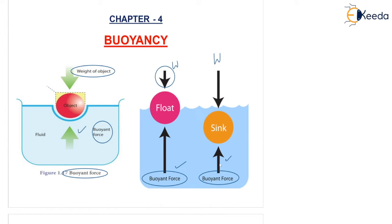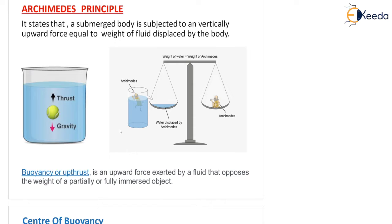Now we are going to see about Archimedes' principle and more concepts of buoyancy. Archimedes' principle states that a submerged body is subjected to a vertically upward force equal to the weight of the fluid displaced by the body. It is very important to note both the direction and magnitude, because this is a force — a vector quantity with both magnitude and direction.